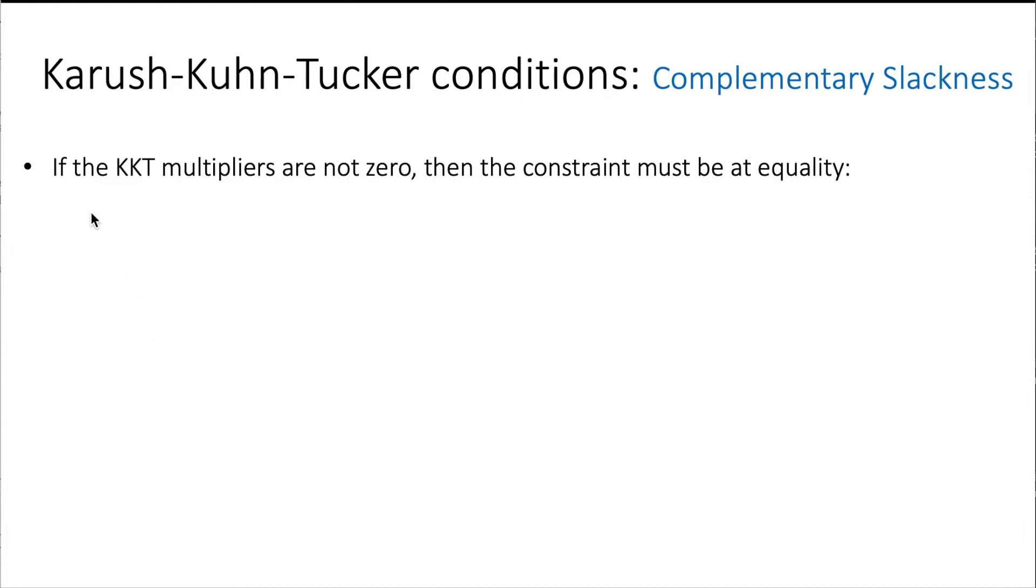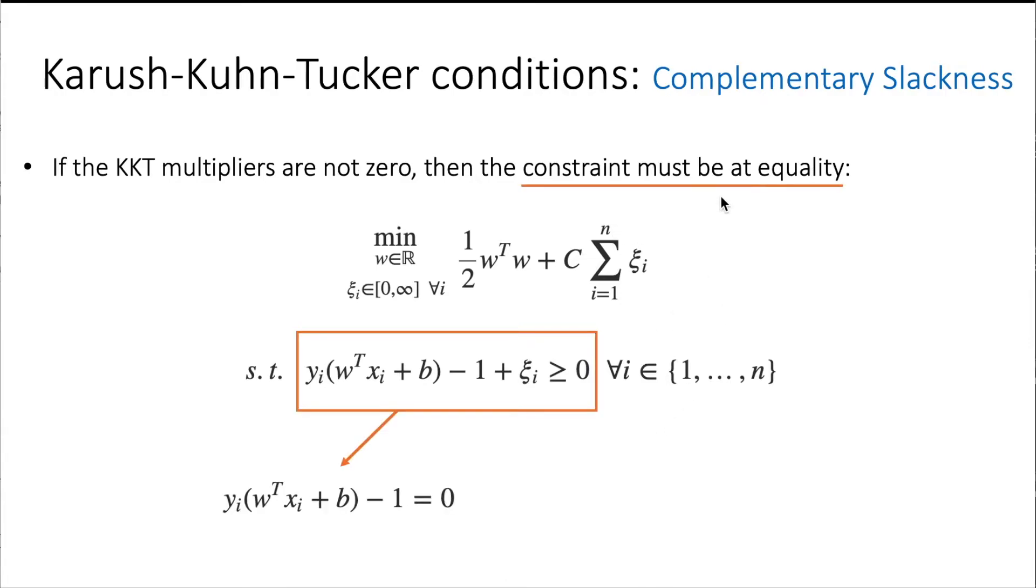Recall that from the original problem, this is the constraint. Because we are applying the KKT conditions for the primal to make sure that the dual will satisfy the primal solutions, this constraint must be at equality.